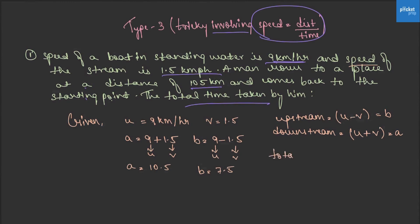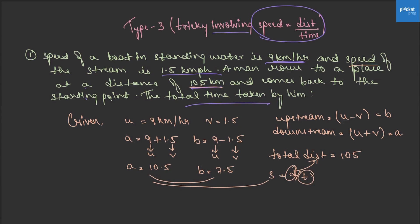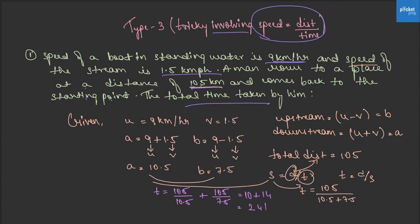Total distance is 105 km. Using time equals distance divided by speed, the total time equals 105 divided by 10.5 plus 105 divided by 7.5, which equals 10 plus 14, that is 24 hours. That is the answer.